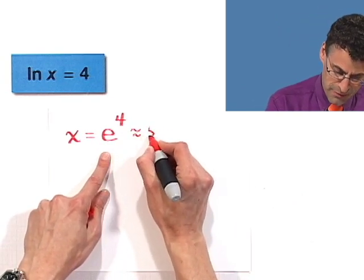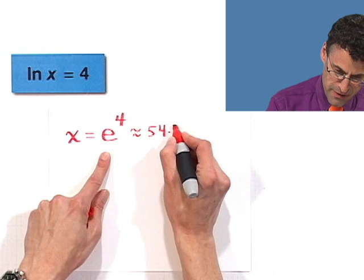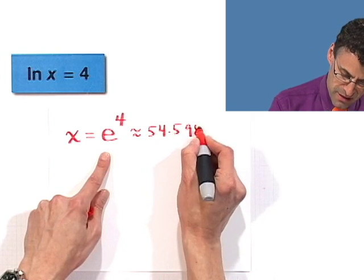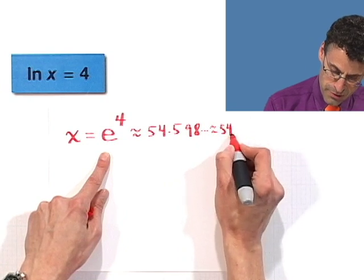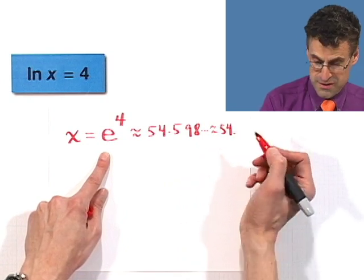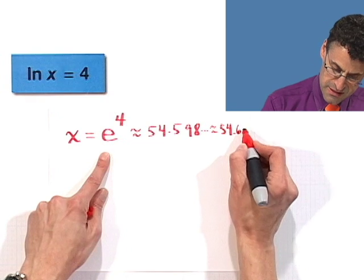This is about 54.598, it goes on for a long time, in fact forever. If you want to round that, you can round it to 54, if you want to round it to the nearest hundredths, it would be 54.60.